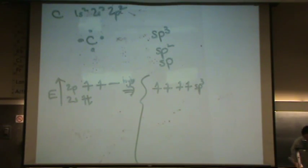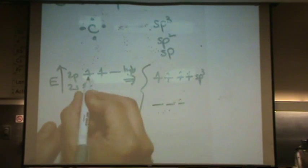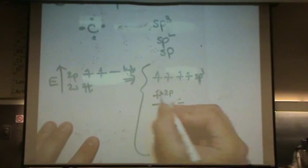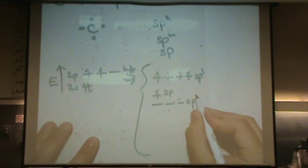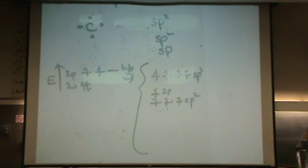It can form other kinds of hybridization. For example, sp2, where two of the p's mix with one of the s's. One of the 2p's stays as is, keeps its electron. And the 2s and two of the 2p's mix to form sp2 with one electron in each. That's another type of hybridization.